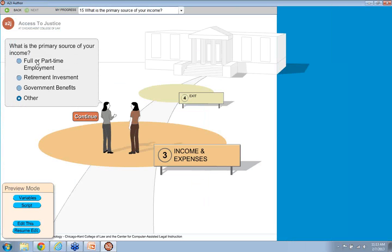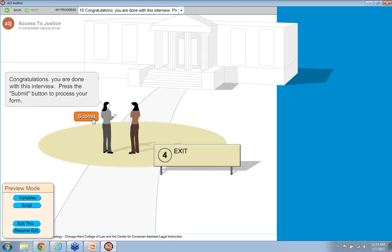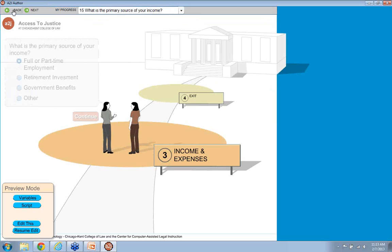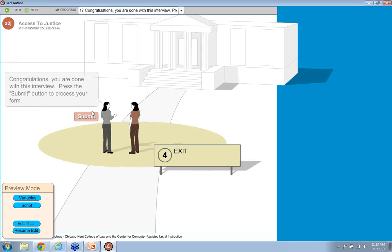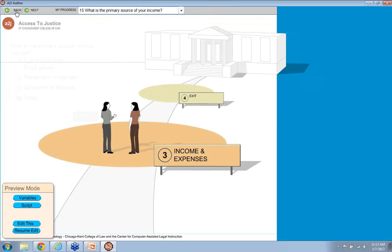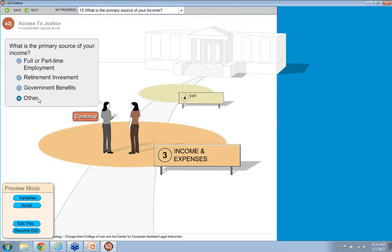Let's preview that real quick. What is the primary source of income? I'm full-time employed. Awesome. Congratulations. You're done with this interview. If we go back. I get my income from something other than these three options. Hit continue. Please describe the source of income. Alimony. And hit continue. Then you finish the interview. So, again, that was branching from the radio buttons as well, but only on this other option, the other button.